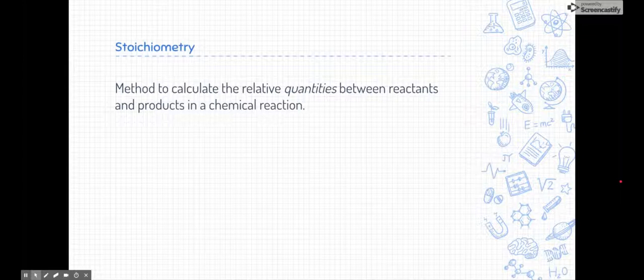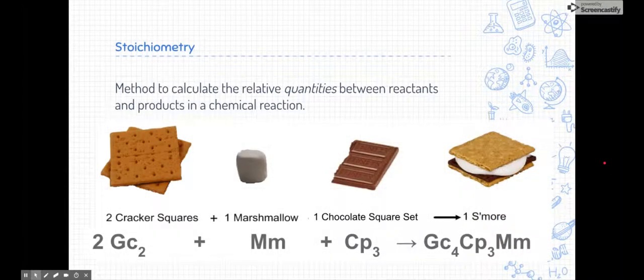So what is stoichiometry? Stoichiometry is a method to calculate the relative quantities between reactants and products in a chemical reaction. In chemistry, this is an extremely important and useful concept because we can take a recipe or a chemical reaction, like you see here where we're making a s'more, and we can scale it. Here's a general s'mores equation: two cracker squares, one marshmallow, one chocolate square make a s'more. We can change this up. What if we wanted to scale it up or scale it down? Stoichiometry helps us make those comparisons using the base recipe.